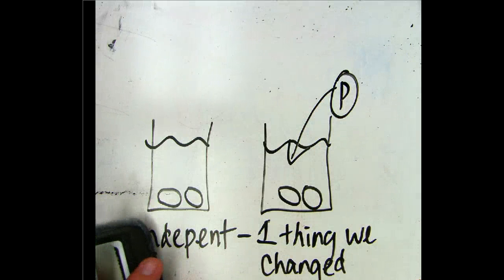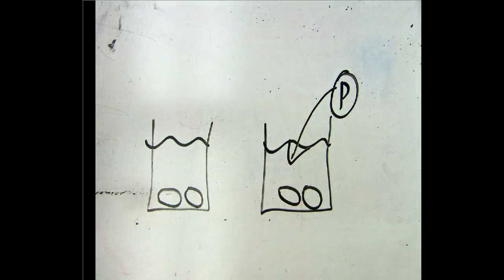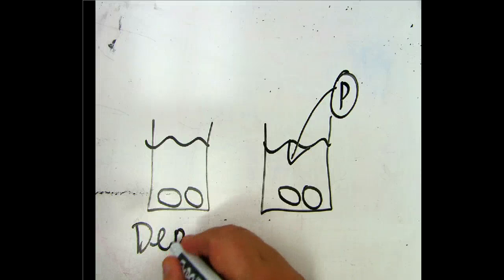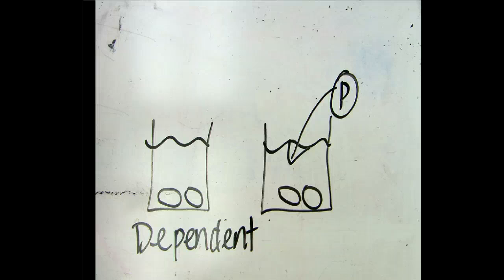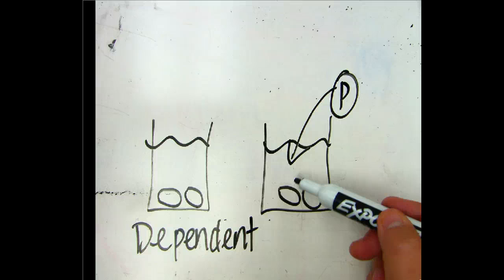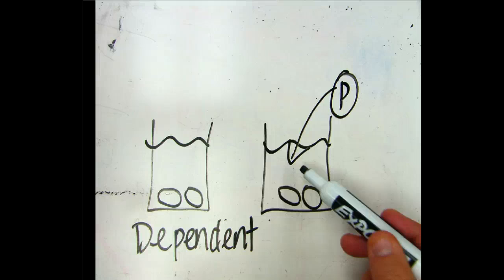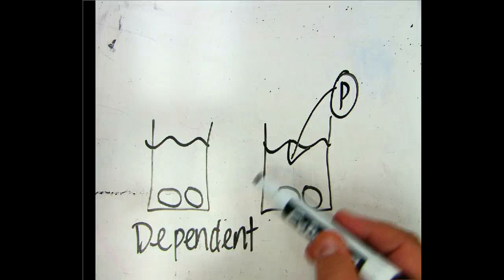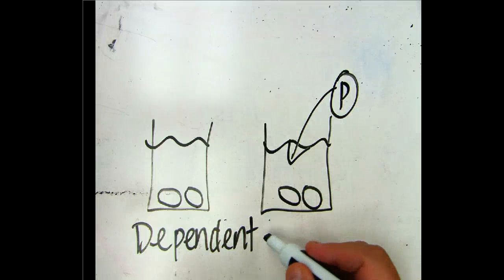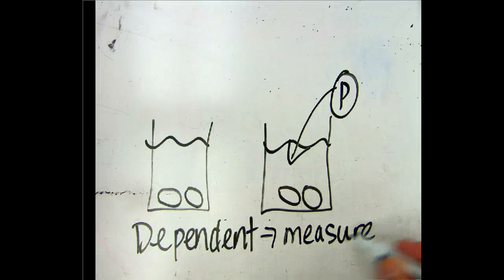Now, the dependent variable is the thing that we're trying to find out. What are we measuring? So the dependent variable is what are we trying to find out? Well, we're trying to find out if phosphate kills mussels. How can we tell if phosphate kills mussels? Well, we need to count how many mussels die in the tank with the phosphate.